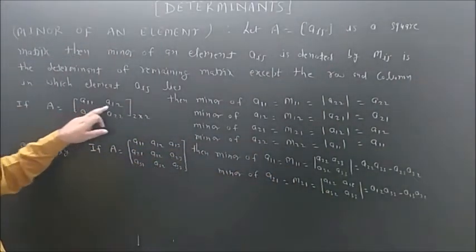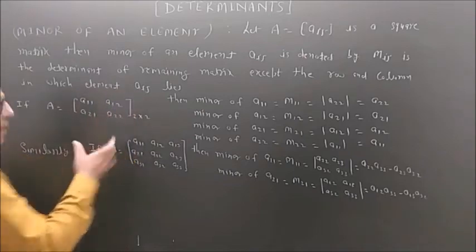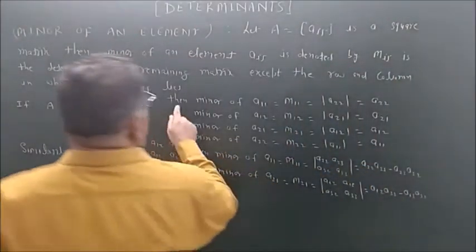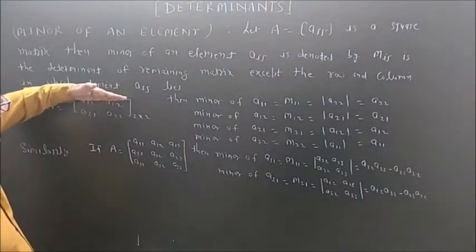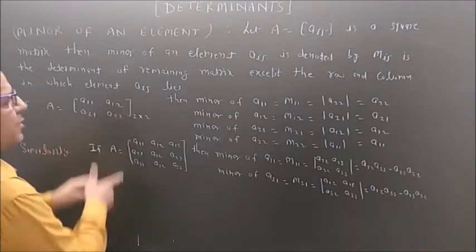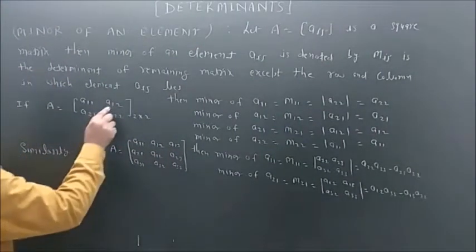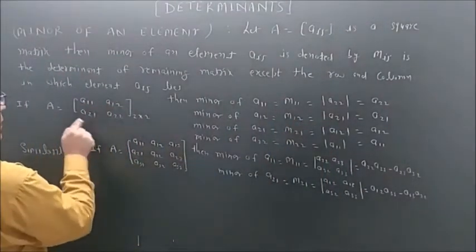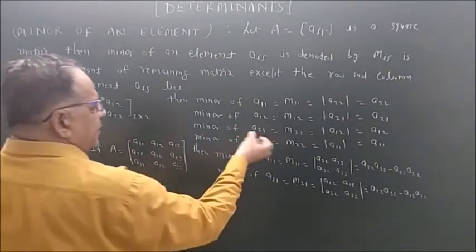For example, if A is a 2x2 matrix with elements a11, a12, a21, a22, there are 4 elements so we can find 4 minors. The minor of a11, denoted m11, is found by leaving the first row and first column — the only remaining element is a22, so m11 equals a22. Similarly, the minor of a12, denoted m12, is found by leaving that row and column, leaving only a21, so m12 equals a21.